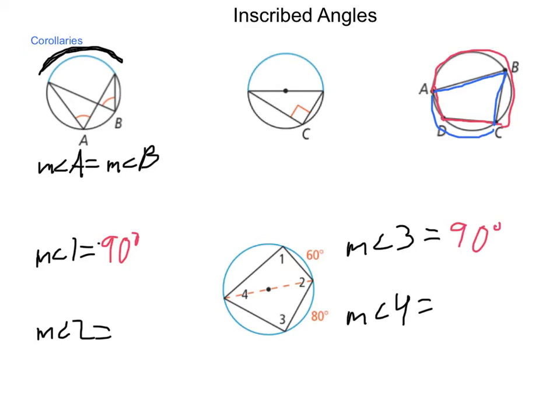Next, I believe it would be easiest to find the measure of angle 4, because the measure of angle 4 intercepts this 60 degree arc and this 80 degree arc. 60 plus 80 is 140, and angle 4 is going to be half of that, so the measure of angle 4 is 70 degrees.